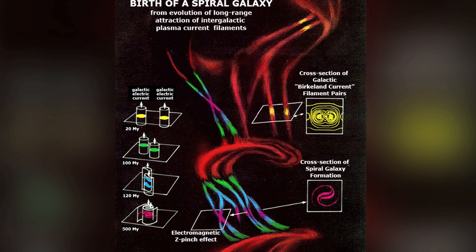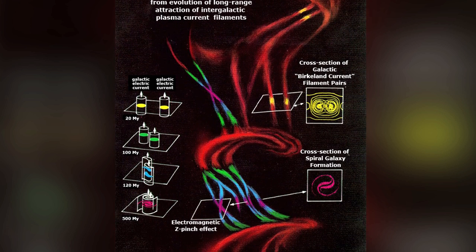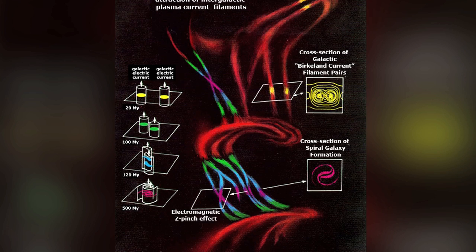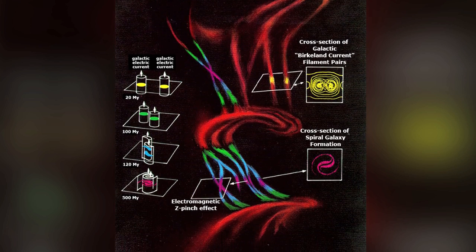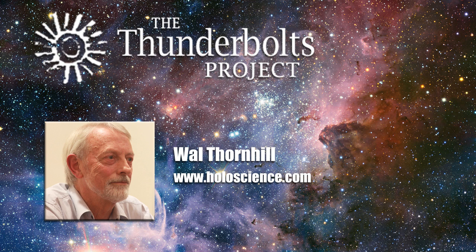What's more, the plasma cosmologists have explained how stars form along these filaments once they're compressed down into the spiral arms of a galaxy. So all of this has been explained, and yet it's a total mystery to astronomers.